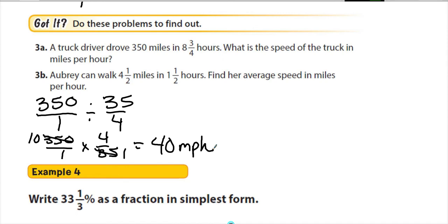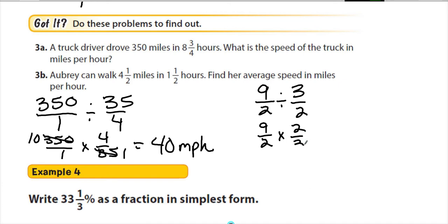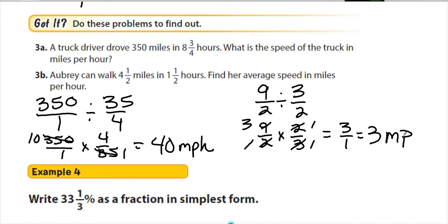3b: Aubrey can walk 4 and a half miles in 1 and a half hours — find her average speed in miles per hour. Miles first: 4 and a half converts to 9 halves. Divided by 1 and a half, which is 3 halves. Keep, change, flip: 9 halves times 2 thirds. Cancel the 2s to 1, and 3 goes into 9 three times — leaving 3 times 1 over 1 times 1, which is 3. Answer: 3 miles per hour.